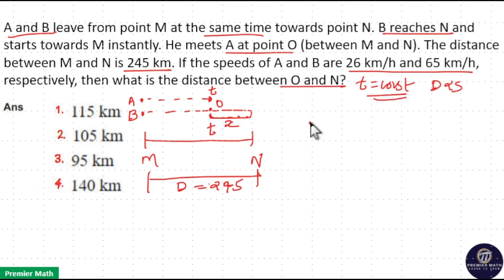Here speed ratio of A and B is 26 by 65, which is equal to the distance ratio of A and B. Distance covered by A is total distance MN minus ON, which is D minus X. Distance covered by B is D plus X.